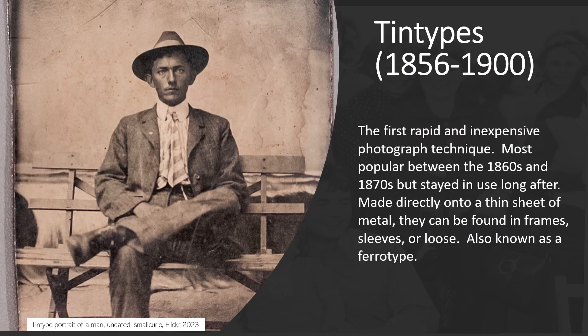The tintype, also known as a ferrotype, is a photographic process widely used from the mid-19th to early 20th centuries. It involved creating a direct positive image on a thin sheet of metal — typically iron or tin, hence the name tintype. They were popular because they were relatively inexpensive to produce and provided a fast turnaround time for portraits. The resulting image was often small, durable, and could easily be framed, carried, or even mailed to friends and family.